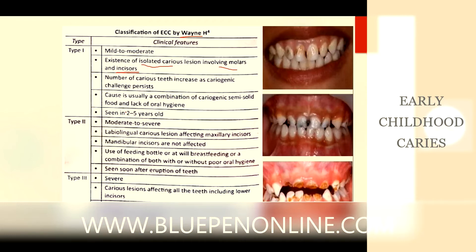Type 2 is moderate to severe. In this case, there are labiolingual carious lesions affecting maxillary incisors. Mandibular incisors are not affected. The cause is use of a feeding bottle, at-will breastfeeding, or a combination of both, with or without poor oral hygiene, and it is seen soon after eruption of teeth. Type 3 is severe — carious lesions affect all the teeth including the lower incisors. The cause is cariogenic food and poor oral hygiene, and the condition is rampant.